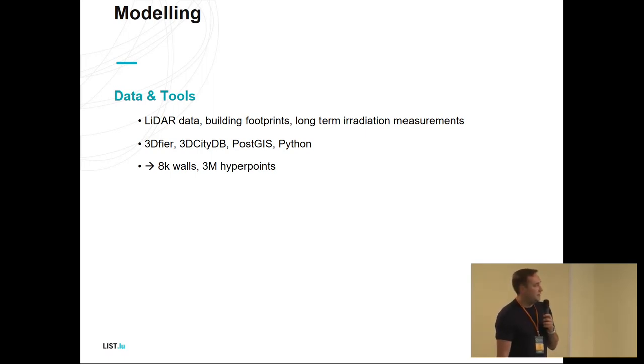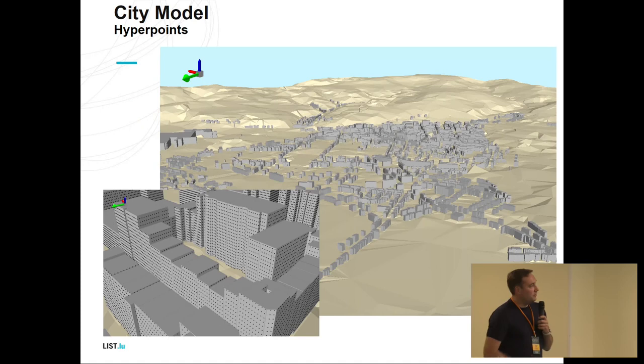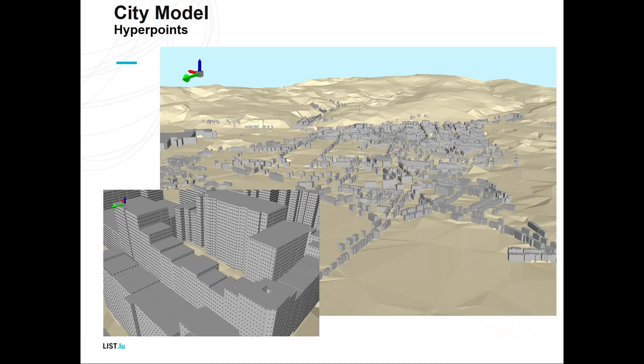To assess the global irradiation, which leads to a photovoltaic potential, we generated hyperpoints. These hyperpoints are a gritted representation of the walls or the facades, which have a one-metre spacing. Basically, this is a 3D model of Esch-sur-Alzette with the terrain included. Here it's just a zoomed-in view. You have these little black dots and each little dot will be enhanced with the global irradiation later on to assess the PV potential. It's about 8,000 building facades and about 3 million of these little dots, which we have to calculate the solar irradiation for.